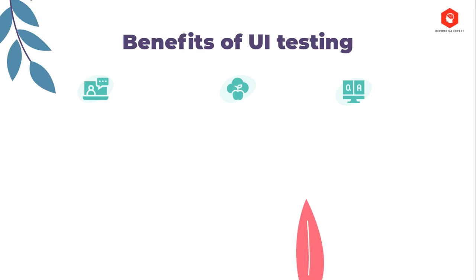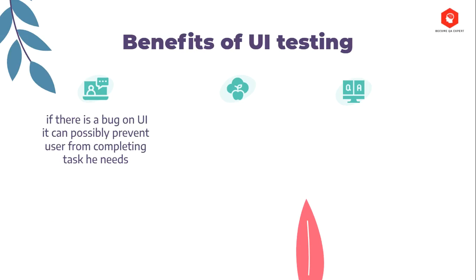What are the benefits of UI testing and why is it so important? First, if there is a bug on the UI, it can possibly prevent the user from completing the task they need. Very often, UI is the only way of user interaction with the application. For example, if you cannot post a photo on Facebook, you're not expected to use an available API and upload it by sending a POST request using Postman. So if you're not able to do it using the UI, you're not going to do it at all.